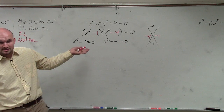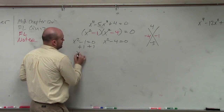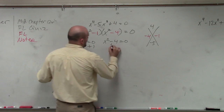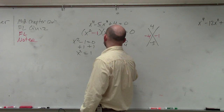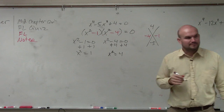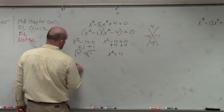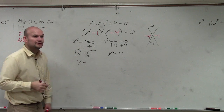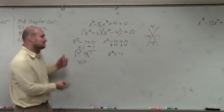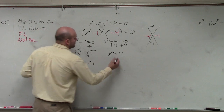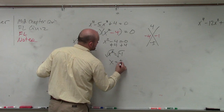Can we now solve for x? Yes. Add 1 — x squared equals 1. Add 4 — x squared equals 4. So now we can go ahead and solve. Square root. Remember, whenever you introduce the square root — the even root — you have to do plus or minus. So that's plus or minus 1. Square root — x equals plus or minus 2.